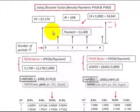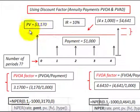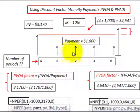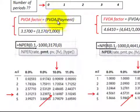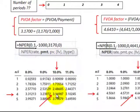Now here's an annuity example. Say we invest $3,170 as the present value of an ordinary annuity, and we want to withdraw $1,000 payments at the end of each year at a 10% interest rate. How many payments can we withdraw? We calculate the present value ordinary annuity factor, go to the PV ordinary annuity table at 10%, find that factor, and move across — it's four periods.